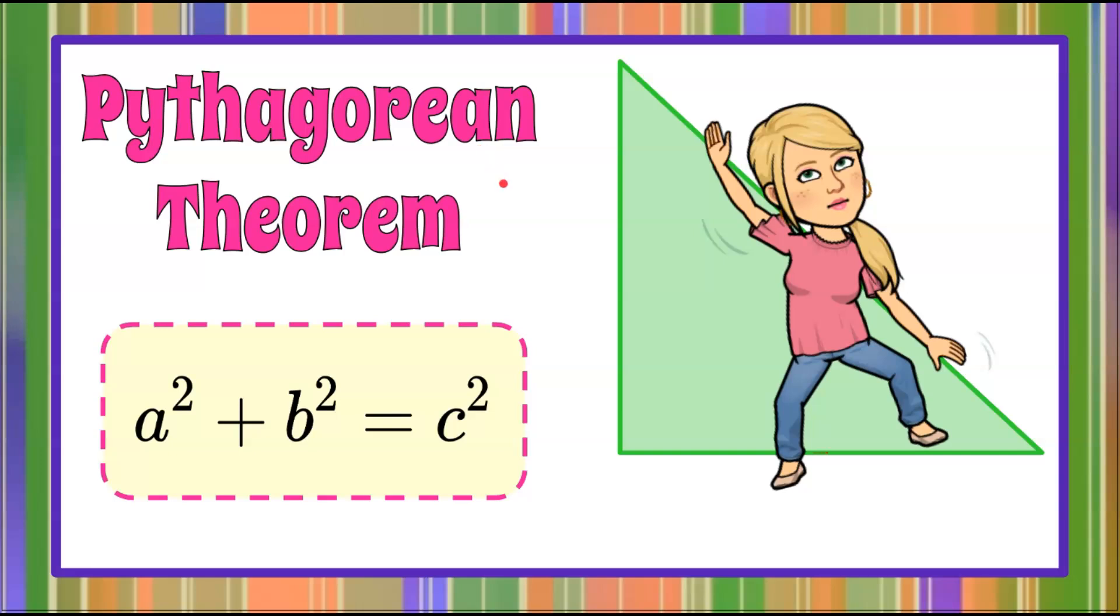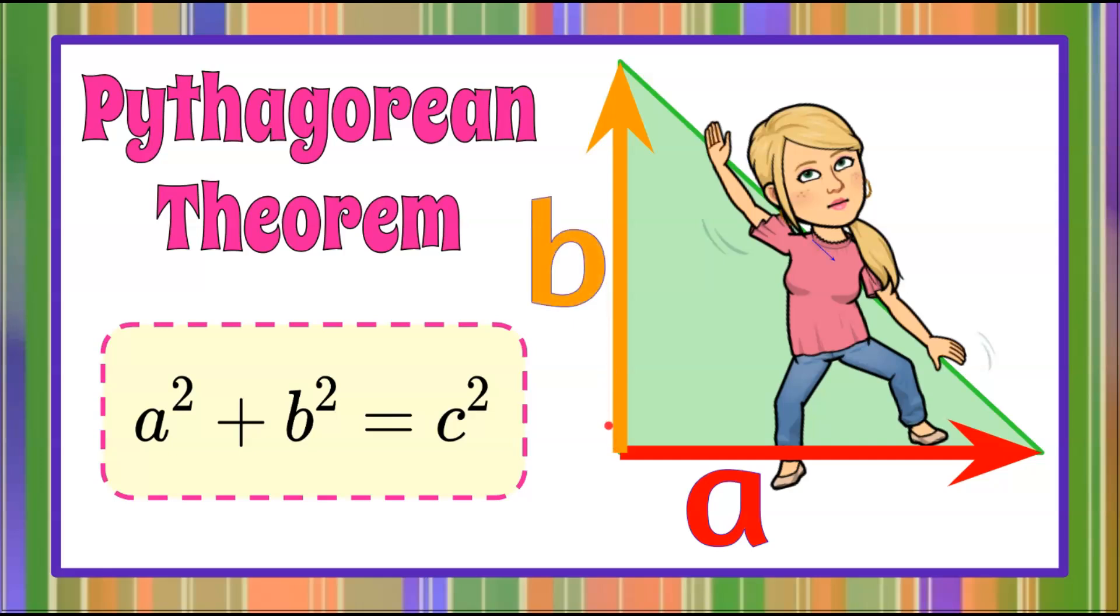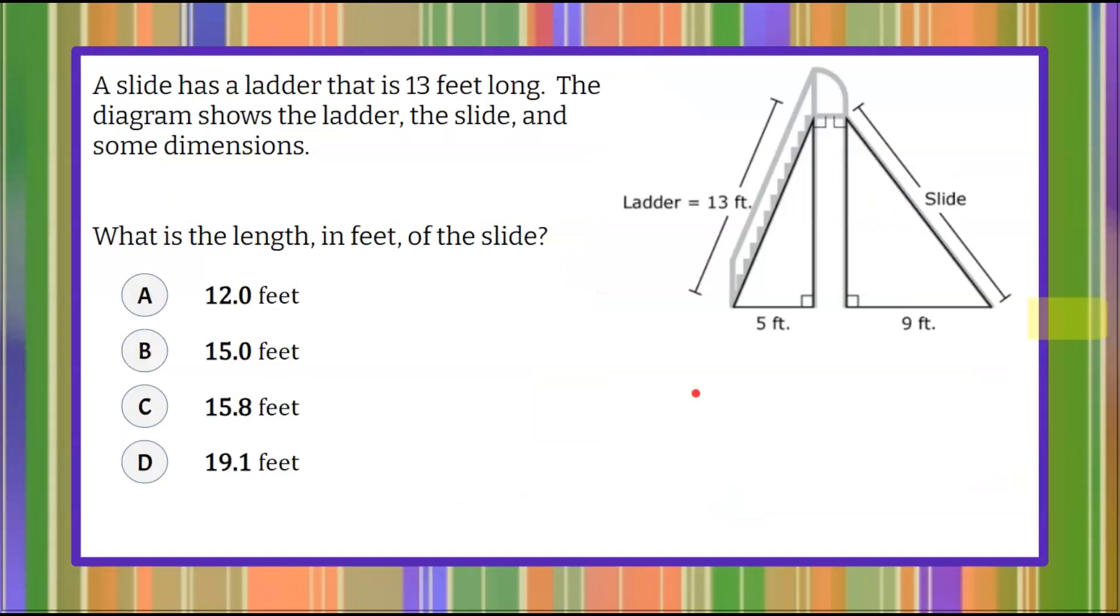It's the Magic of Math here, and today we're talking Pythagorean Theorem, where we have the legs that form a right angle and the hypotenuse, the longest side, opposite the right angle. Here we go.